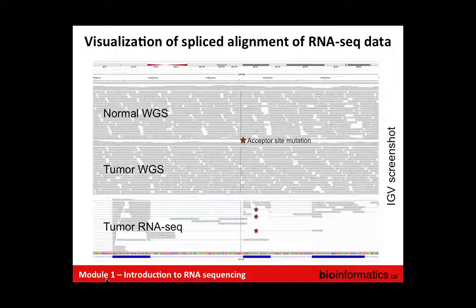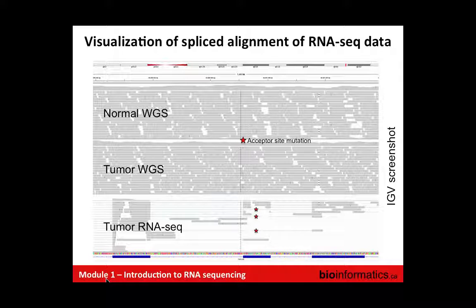TopHat is comparable to BWA in terms of speed. We mostly use it because that's what the TopHat authors chose as their short-read aligner. TopHat is really a series of heuristics built on top of Bowtie alignments. In theory you could swap Bowtie for BWA and it would probably work fairly well — the authors of TopHat also wrote Bowtie, so that's what they used.